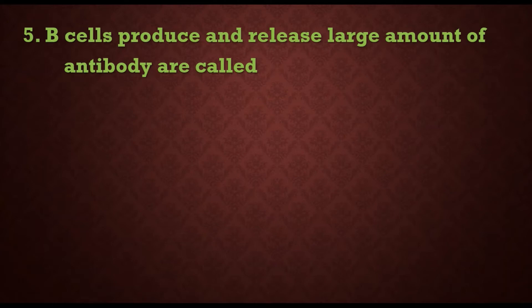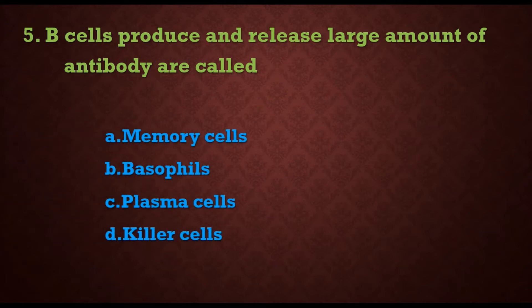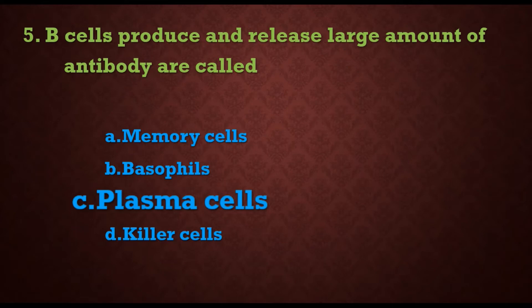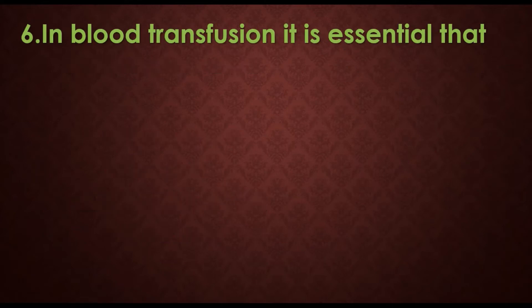Fifth question: B cells that produce and release large amounts of antibody are called what? Options are: a) memory cells, b) basophils, c) plasma cells, d) killer cells. The answer is c) plasma cells. These plasma cells differentiate into memory cells and produce the antibodies.